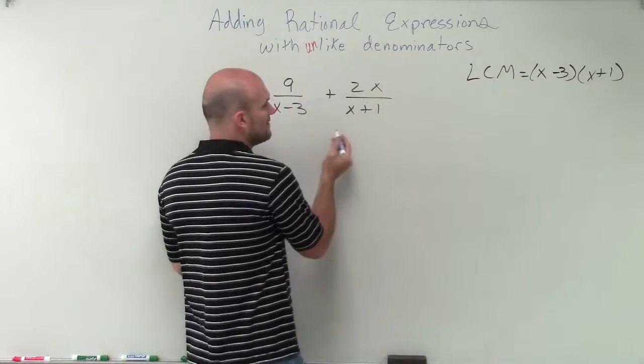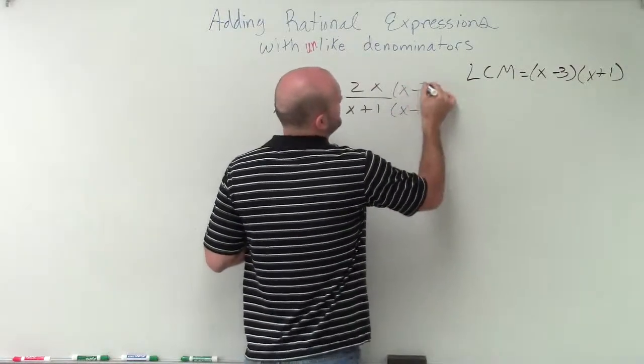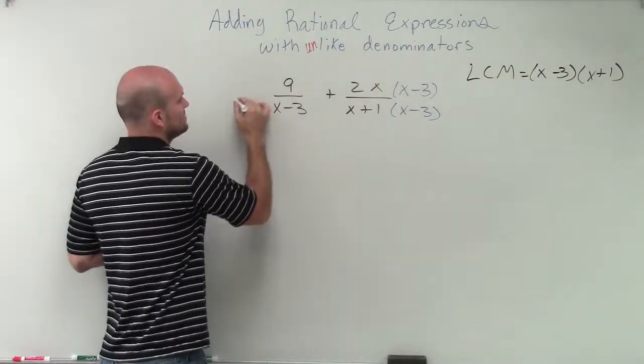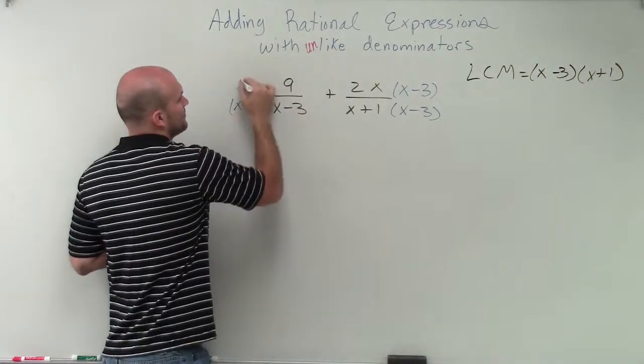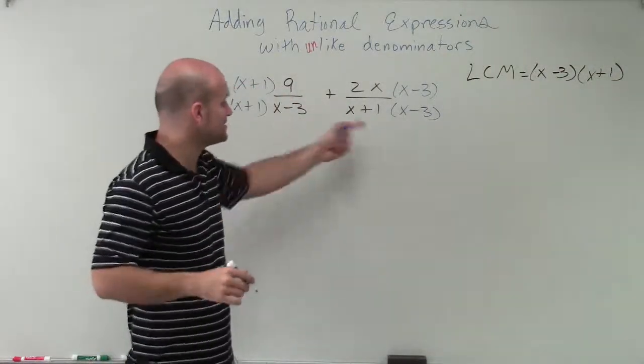What I can do then is I say, all right, I already have x plus 1 here, so multiply this by x minus 3. Make sure you multiply them on the numerator and your denominator. Here, I already have x minus 3, so let's just multiply by x plus 1. Therefore, you know you're going to have common denominators since you multiply them.